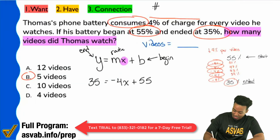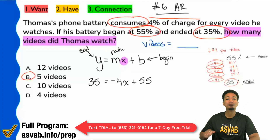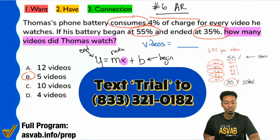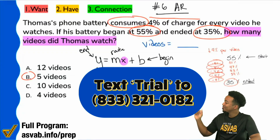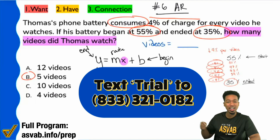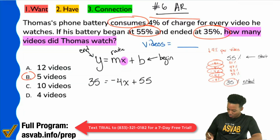As a reminder, this is unit number six in the arithmetic reasoning course in your ASVAB account. If you're in my program, you can find tons more questions just like this with step-by-step solutions, lessons, and guided practice. And if you're not in the program and you'd like to try it for free for a full week, just text TRIAL to 833-321-0182, have a conversation with my robot, and it'll set you up. So here we are — let's go ahead and solve this now, nice and easy.